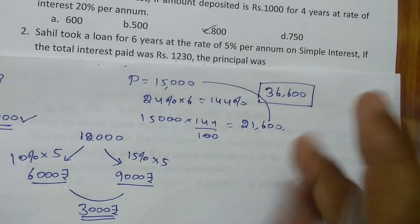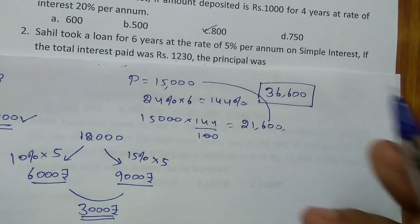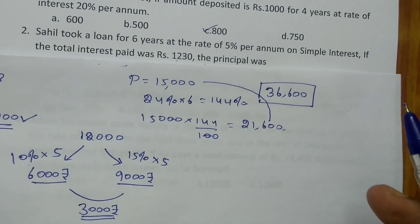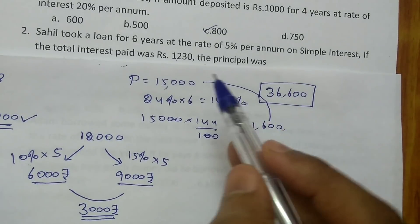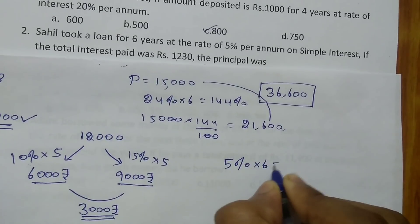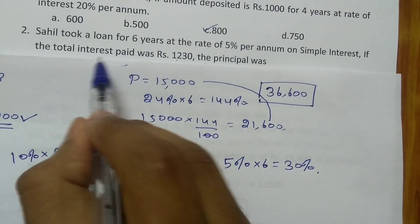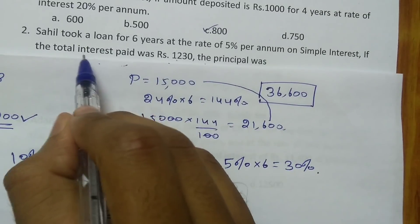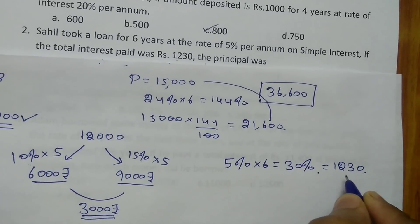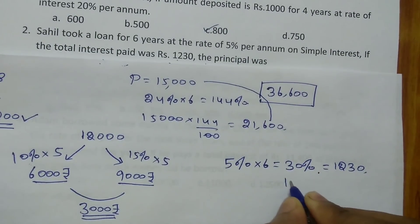Next question: Sahil took a loan for 6 years at the rate of 5% per annum simple interest. If the total interest paid was Rs.1230, what was the principal? Sahil pays 5% every year for 6 years, so 5% into 6 = 30%. It is stated he paid Rs.1230 as total interest, so 30% equals Rs.1230. You have to find the principal, which is 100%.